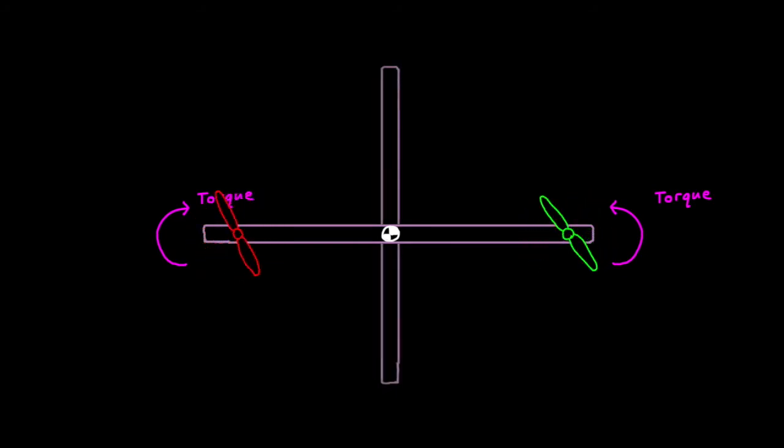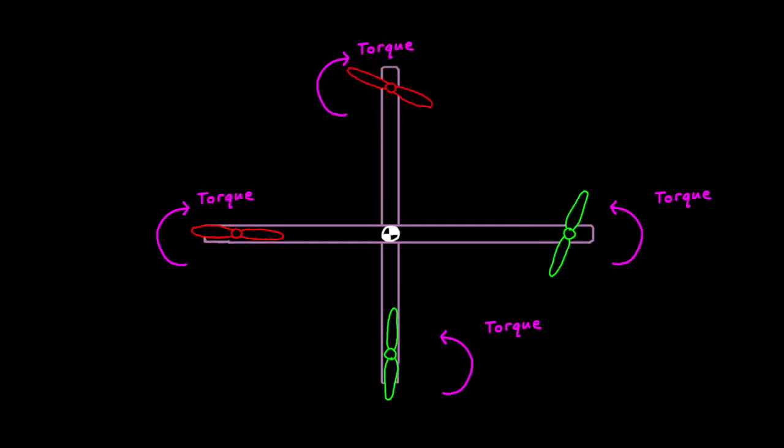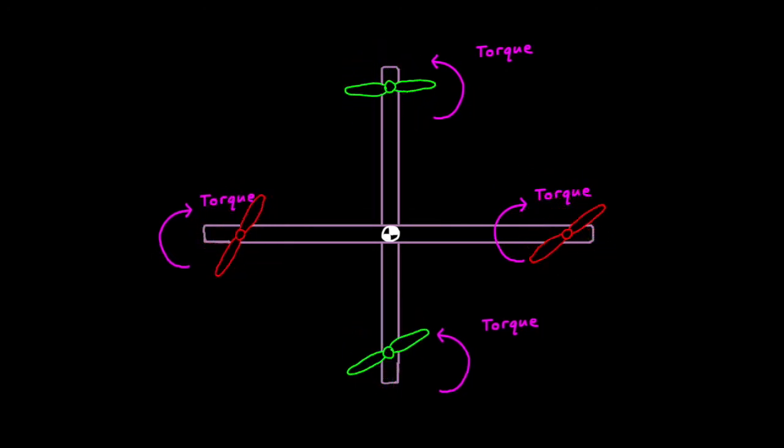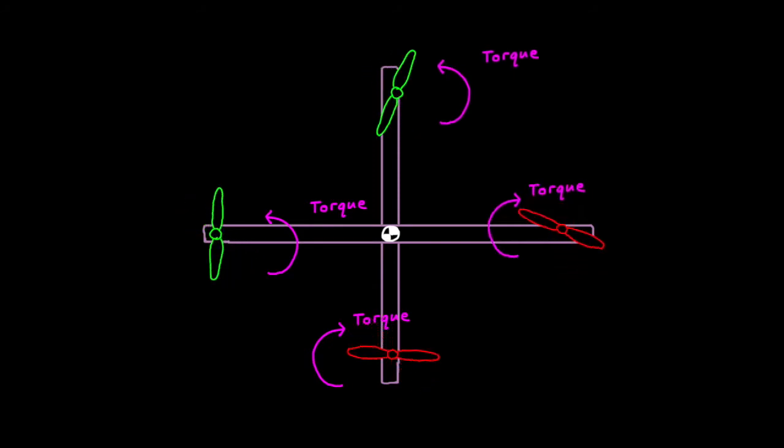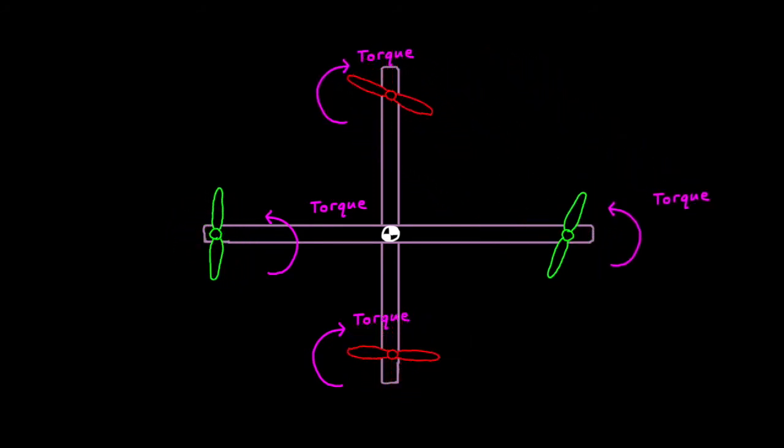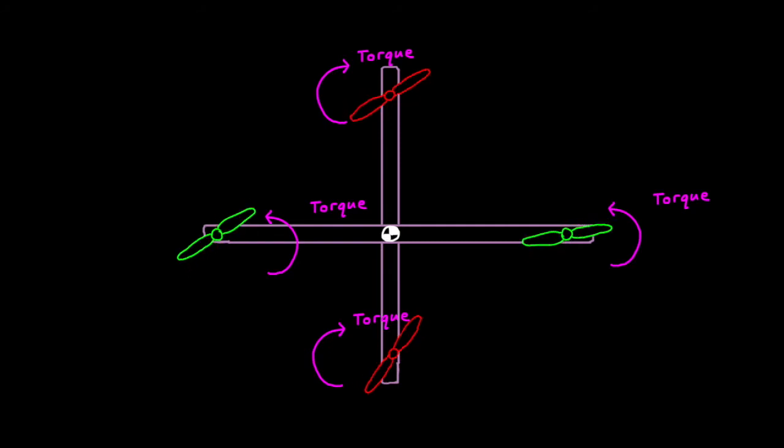With this configuration, we can hover by accelerating each motor until they each produce a force one-fourth that of gravity. And as long as we have two counter-rotating motors, the torques from spinning the propellers will balance out and the drone will not spin. It doesn't matter where you put the counter-rotating motors, as long as there's two of them in one direction and two in the other direction. But quadcopter developers settled on a configuration with opposing motors spinning in the same direction, so there must be a reason for this. And there is.